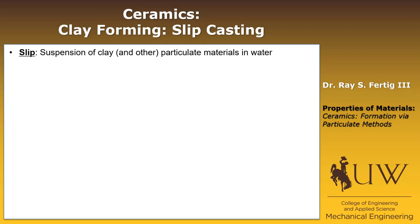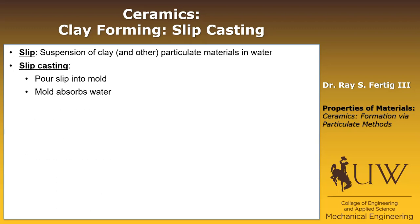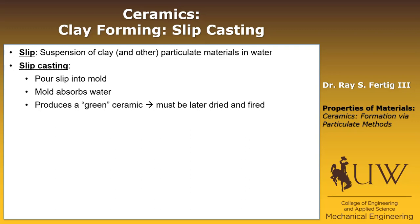We need to define what a slip is first. A slip is just a suspension of clay and/or other particulate materials in water or some other suspension liquid. Slip casting is simply pouring the slip into some mold. The mold absorbs the water, and after the water has evaporated or been sucked out, it produces a green ceramic. Green just means that it's not been fired or dried, so it must be dried and fired later.